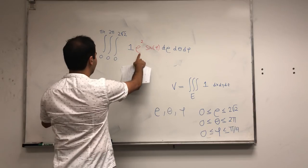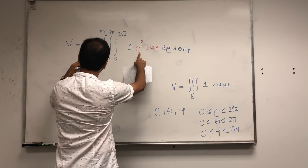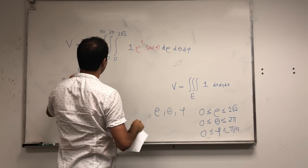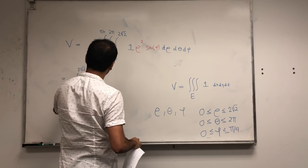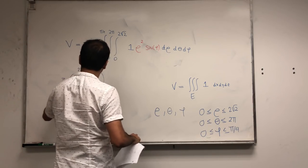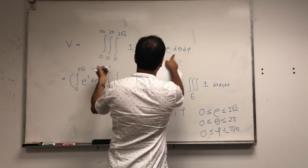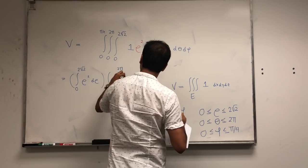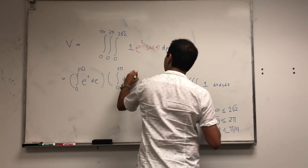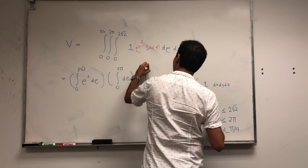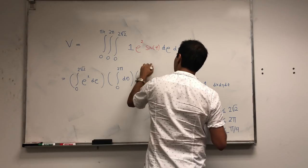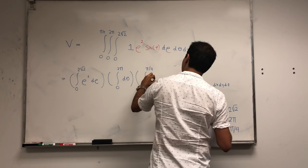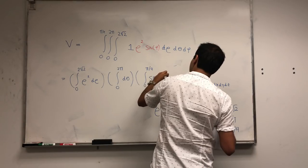Because first of all, do the rho part: integral from zero to two square root of two of rho squared d rho. Integral, well there's no theta, so integral from zero to two pi d theta. And integral from zero to pi over four sine of phi d phi.